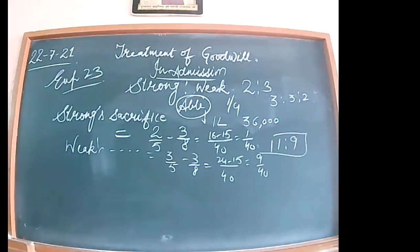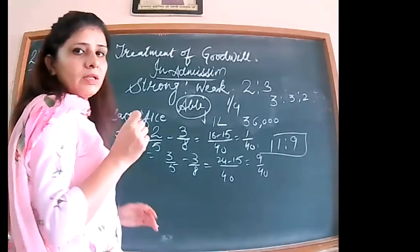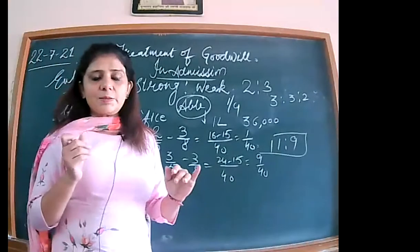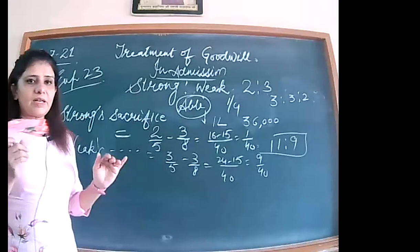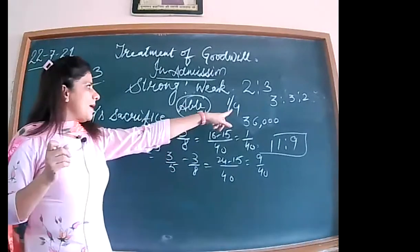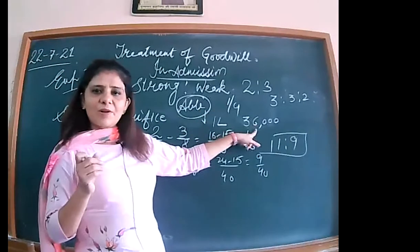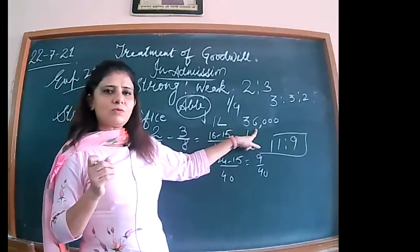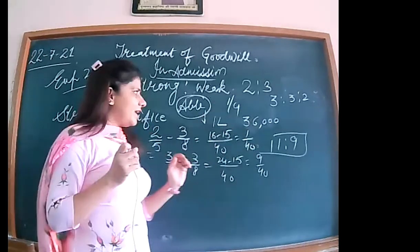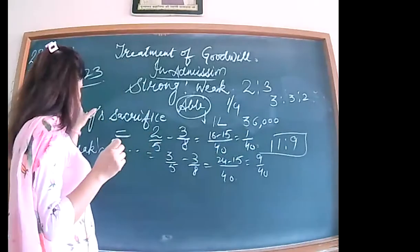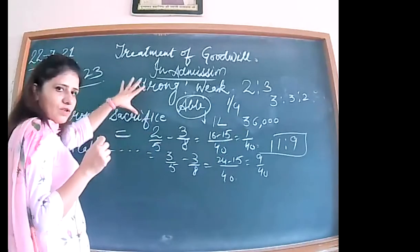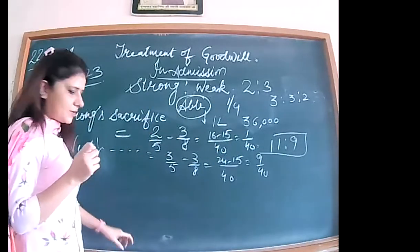The sacrificing ratio is confirmed as 1 is to 9. Now to pass the journal entries related to the treatment of goodwill: Abel brought one lakh capital plus 36,000 as premium for goodwill. The first entry is bank account debited — one lakh to Abel's capital, 36,000 as premium for goodwill — being capital and share of goodwill brought in by Abel into the firm.